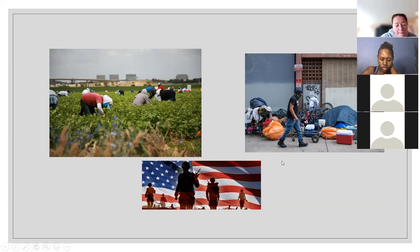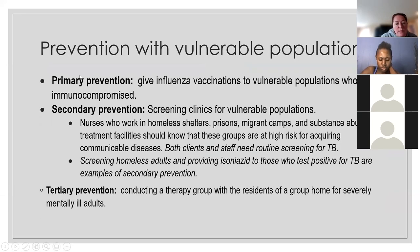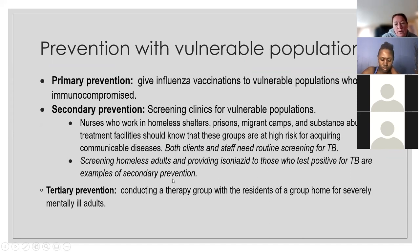For vulnerable populations: primary prevention is giving vaccines. Secondary is screening — having clinics, screening for things like TB, screening homeless adults who test positive. Tertiary is conducting therapy groups for residents who are severely mentally ill. Primary, secondary, and tertiary apply to vulnerable populations just as they do elsewhere.